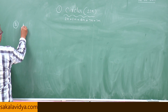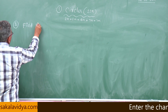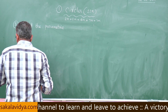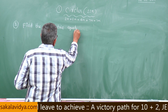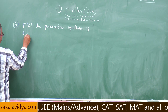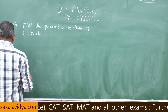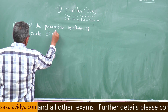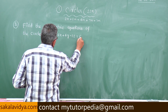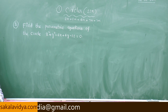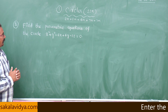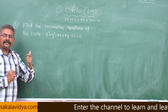Eighth problem: find the parametric equations of the circle x squared plus y squared minus 6x plus 4y minus 12 equals 0. The given circle is not in the standard form — it is in the general form.